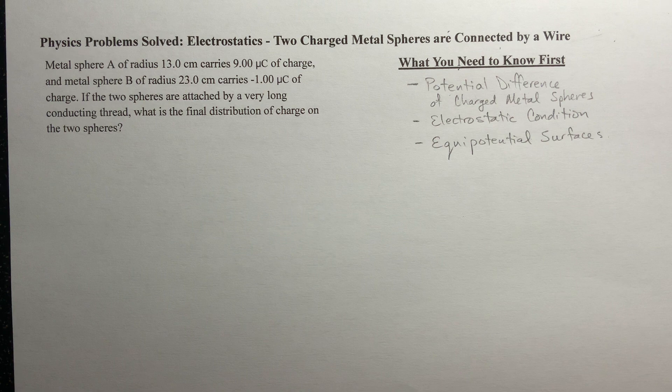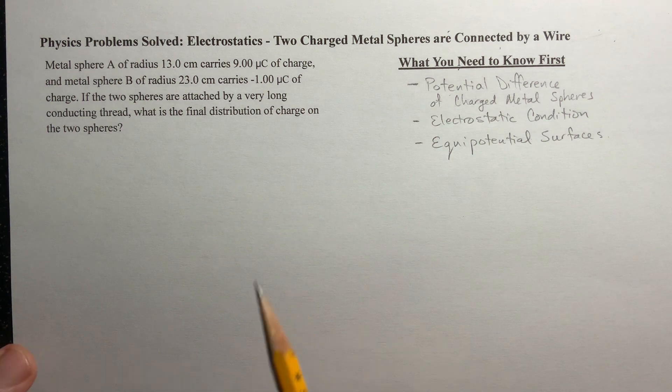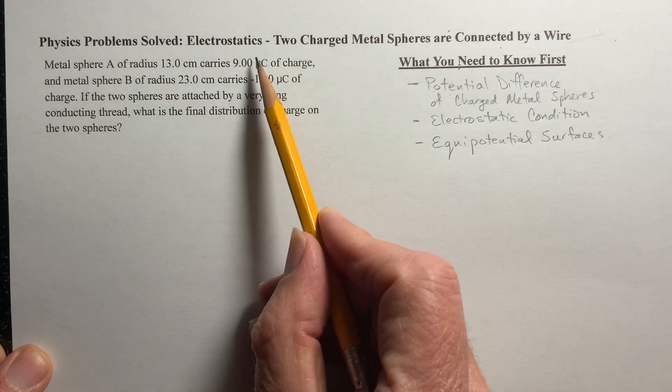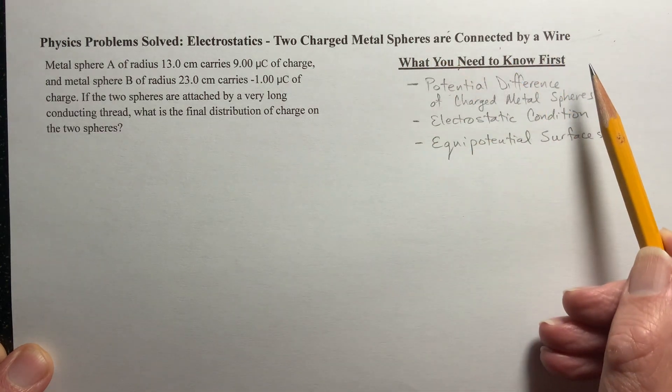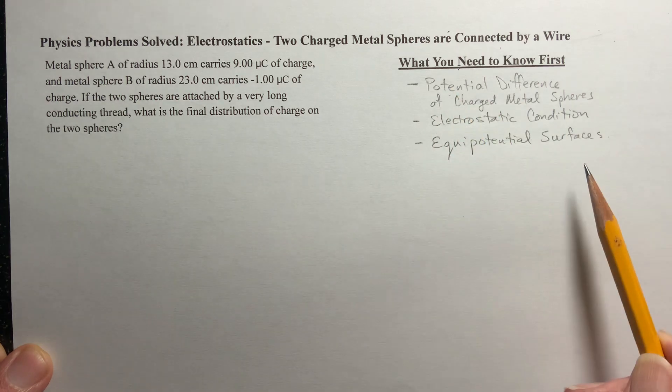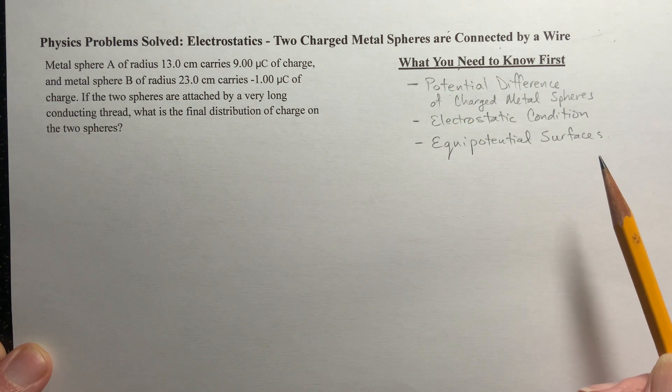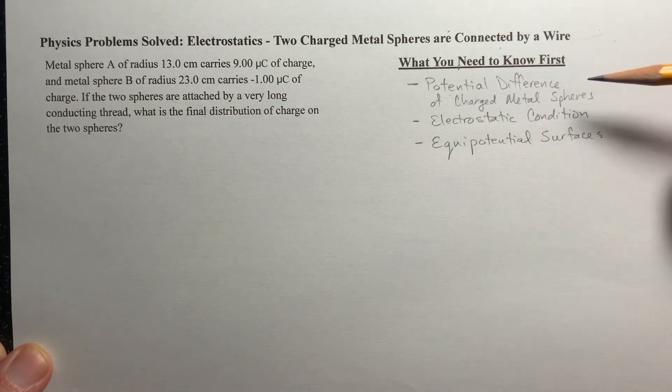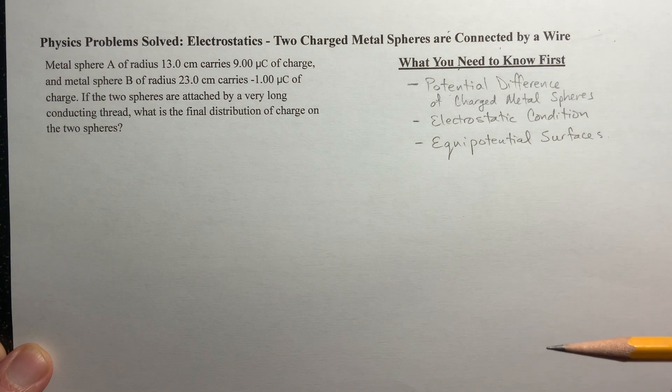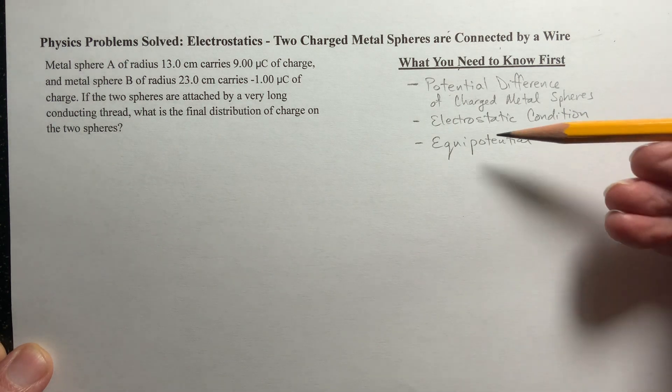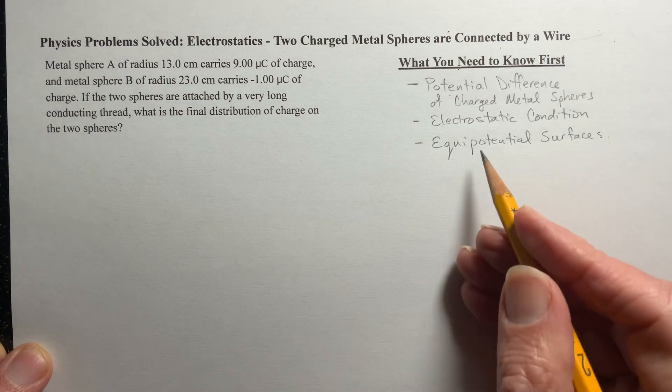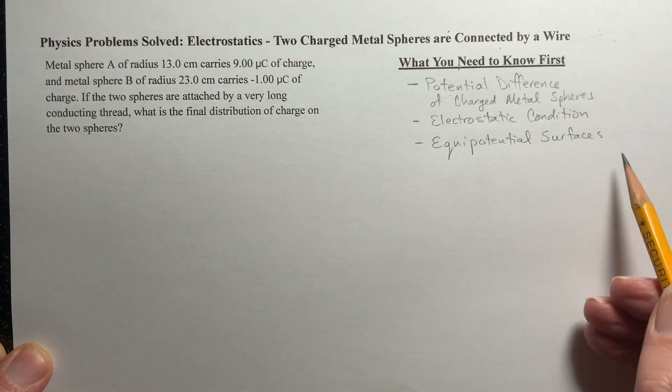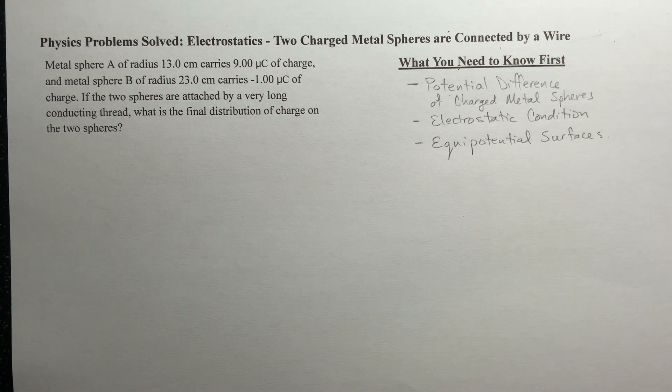So let's get to today's problem. It's an electrostatics problem and we've got two charged metal spheres that are going to be connected by a wire. And these are the ideas you should be somewhat familiar with before we get started: the potential difference of a charged metal sphere, what the phrase electrostatic condition means, and equal potential surfaces as well.